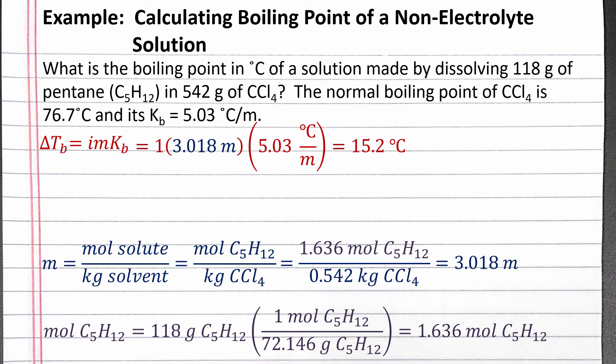To calculate the boiling point of the solution, we add the boiling point elevation to the boiling point of the pure solvent. Completing the calculation, we should get 91.9 degrees Celsius for the boiling point of the solution.